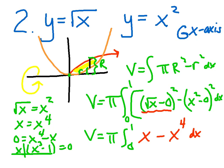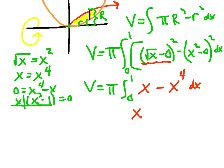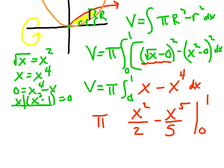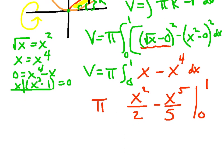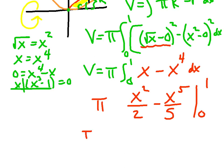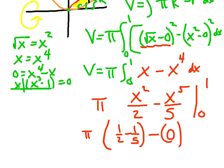This turns out nice — even though square roots can be intimidating, you're squaring them. (Radical x minus 0) squared is just x, minus x to the fourth dx. Integrating: x squared over 2 minus x to the fifth over 5, from 0 to 1, with pi out front. Upper minus lower: one-half minus one-fifth, minus zero. Common denominator gives 3 over 10 times pi.